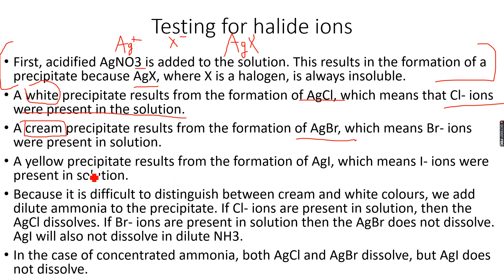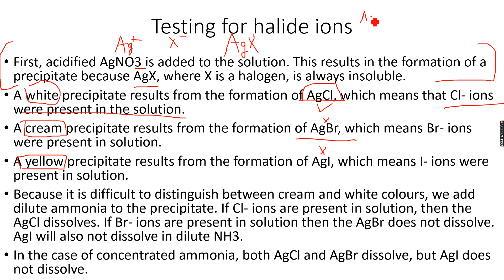If the precipitate dissolves, it was AgCl (white). If the precipitate does not dissolve, it was AgBr. AgI has a completely different color so it's easier to identify, but even with AgI the precipitate will not dissolve when you add dilute ammonia. So if you add dilute ammonia, only AgCl dissolves — AgBr and AgI will not dissolve.